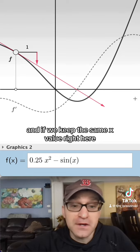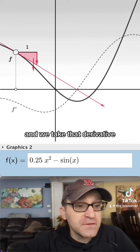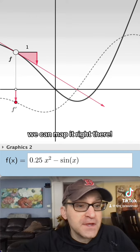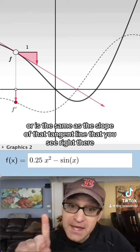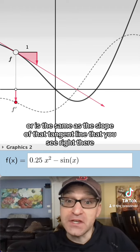And if we keep the same x value right here and we take that derivative, look at this, we can map it right there. The output of the derivative f prime is identical or is the same as the slope of that tangent line that you see right there.